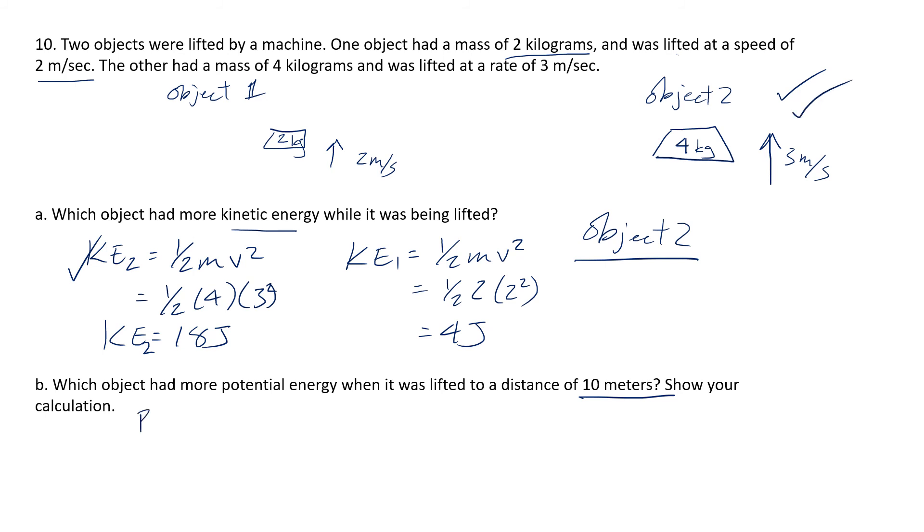Here the potential energy of object two is equal to mgh. I'm going to be lazy and just abbreviate g not as 9.8 but as 10. So my m is 4 kilograms for object two times my g which is 10 meters a second squared times the height of 10 meters. So this is 400 joules. That's a lot.